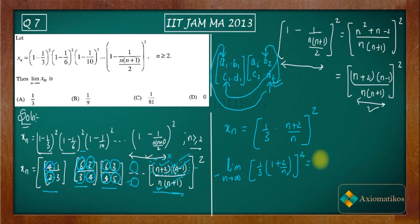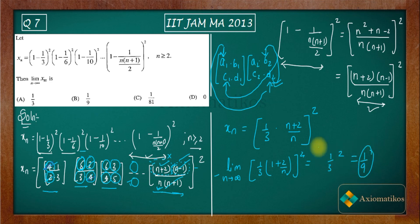To find the limit, we have (1/3)² · (1 + 2/n)² whole. As n approaches infinity, 2/n approaches 0, so the limit equals (1/3)² = 1/9. Therefore option B is the correct answer, and options A, C, and D are incorrect.